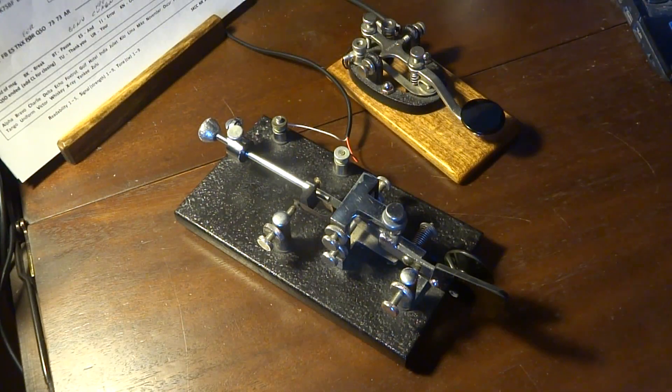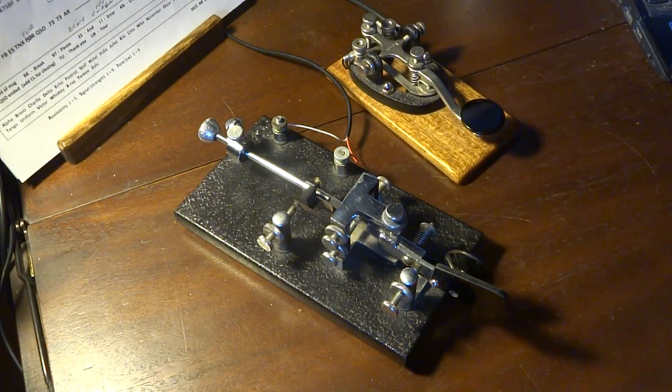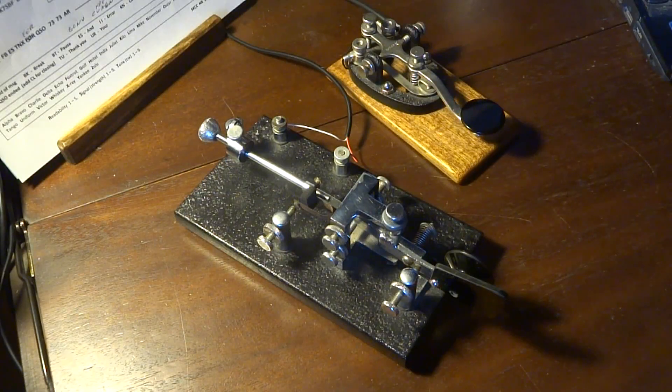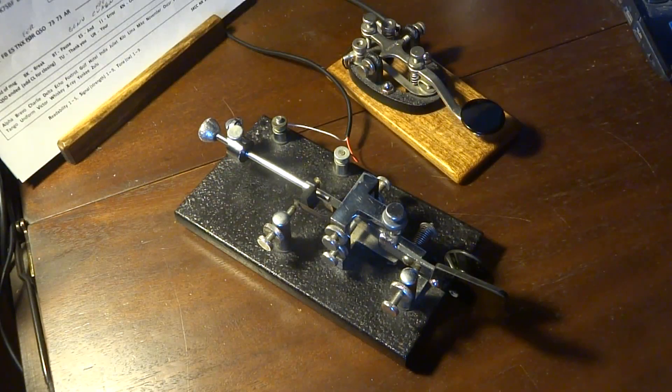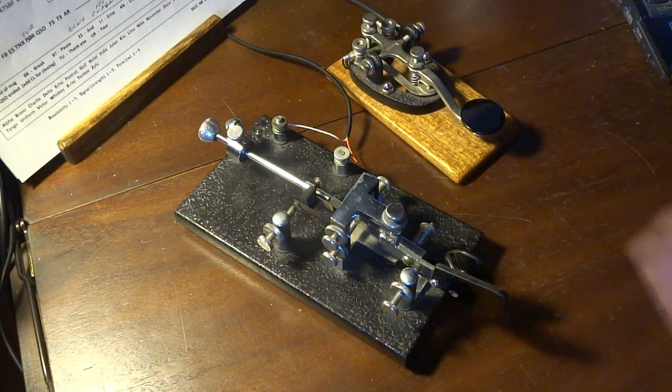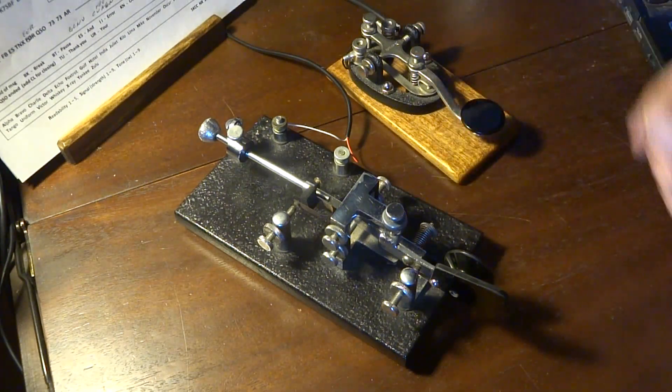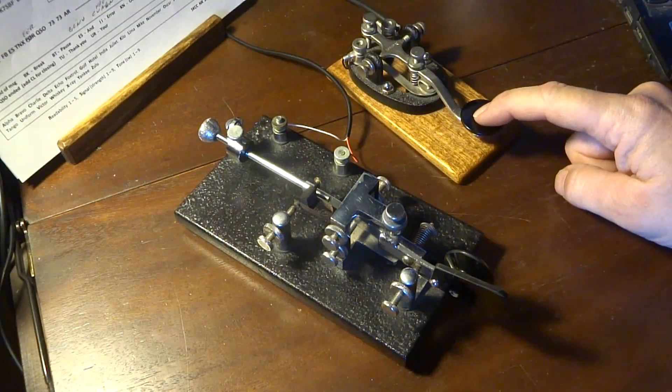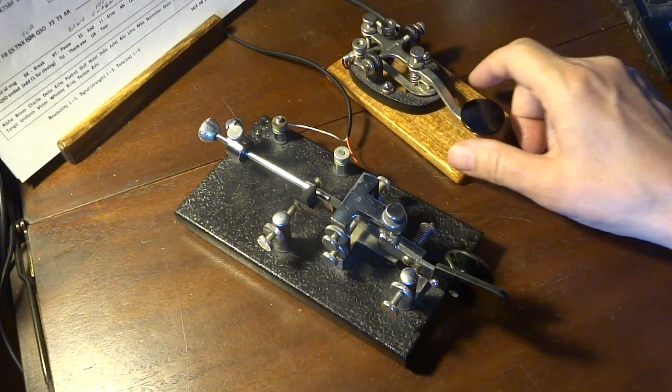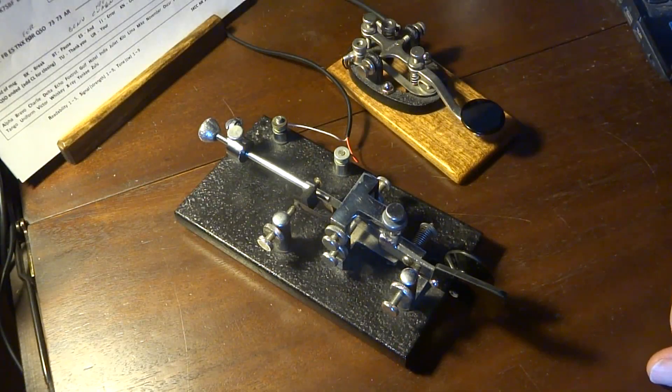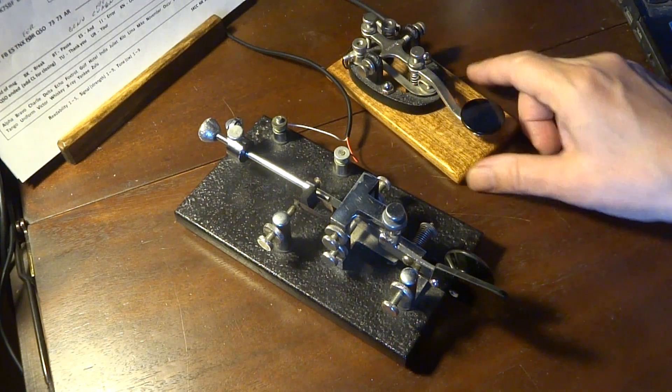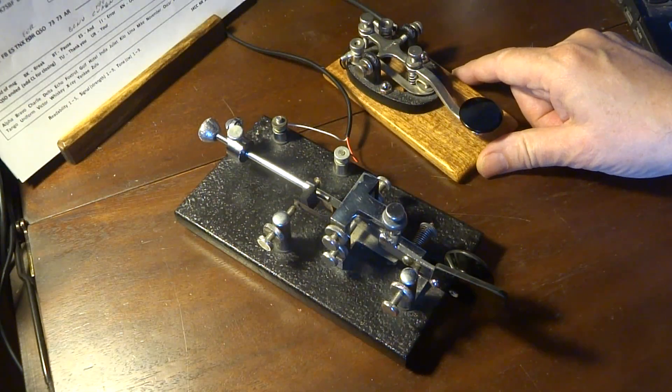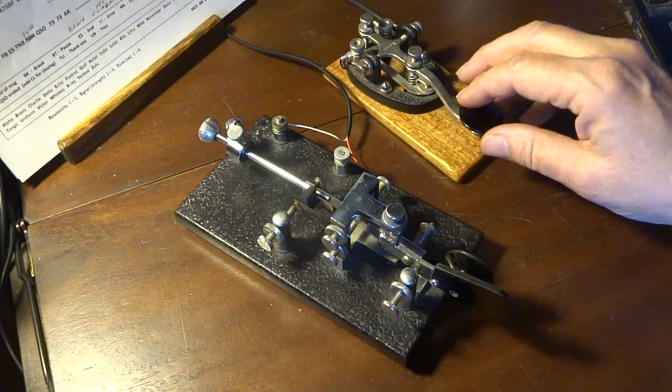And then you follow it with sort of a conclusion to let folks know that you're going to stop sending for a second. And that's typically the letter K or KN if you were trying to reach a particular station. So with the old fashioned straight key, 60s version, where you have to make your own dots and dashes, it's just basically a switch. So if I didn't get a response back from the QRL question mark, then I would send my message to see if anyone's listening and would like to talk, and it would sound like this.